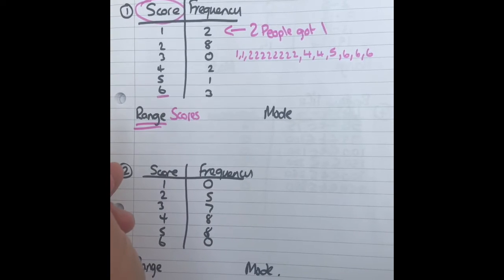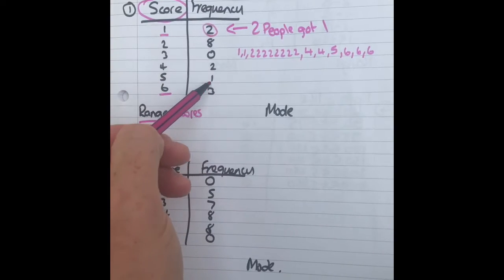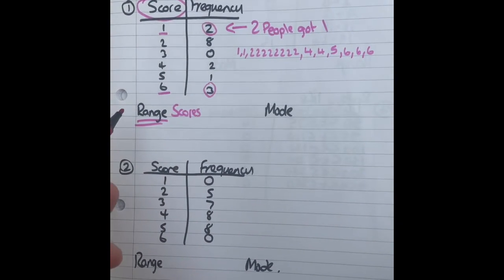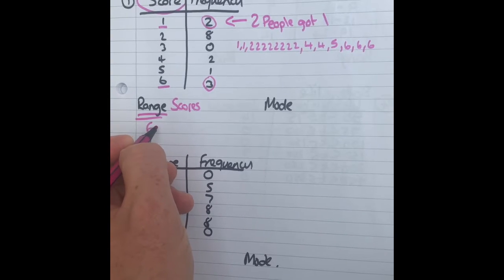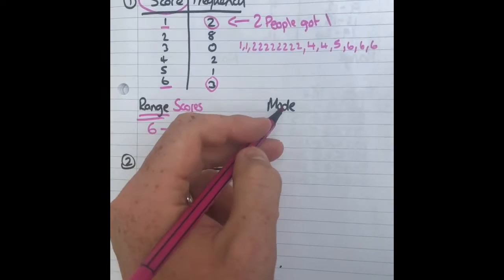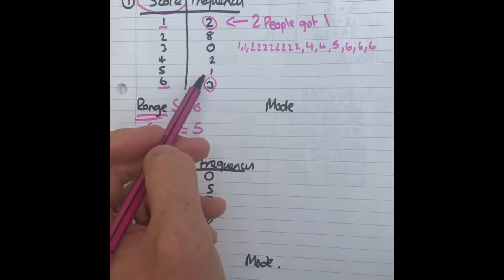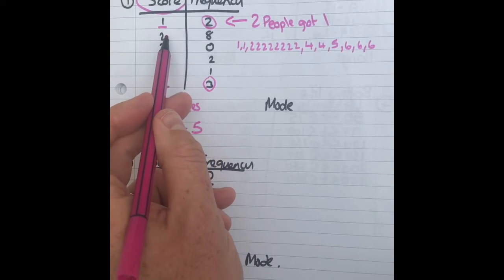The biggest number you can have is six, the lowest number is one. So that means the range will be six take away one, which is five. Mode means the most common, which one occurs the most. Well that's that one there, so that's two.